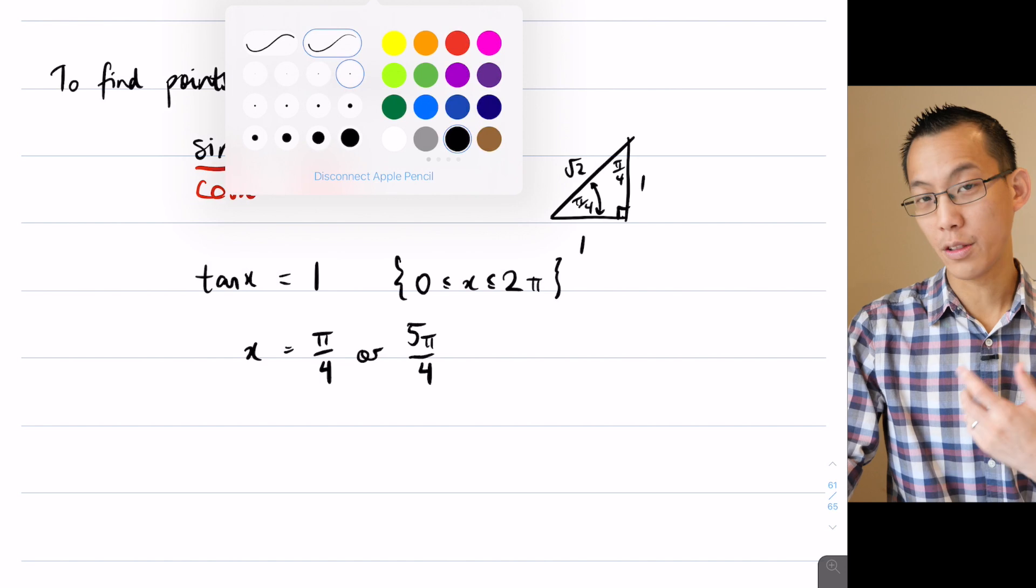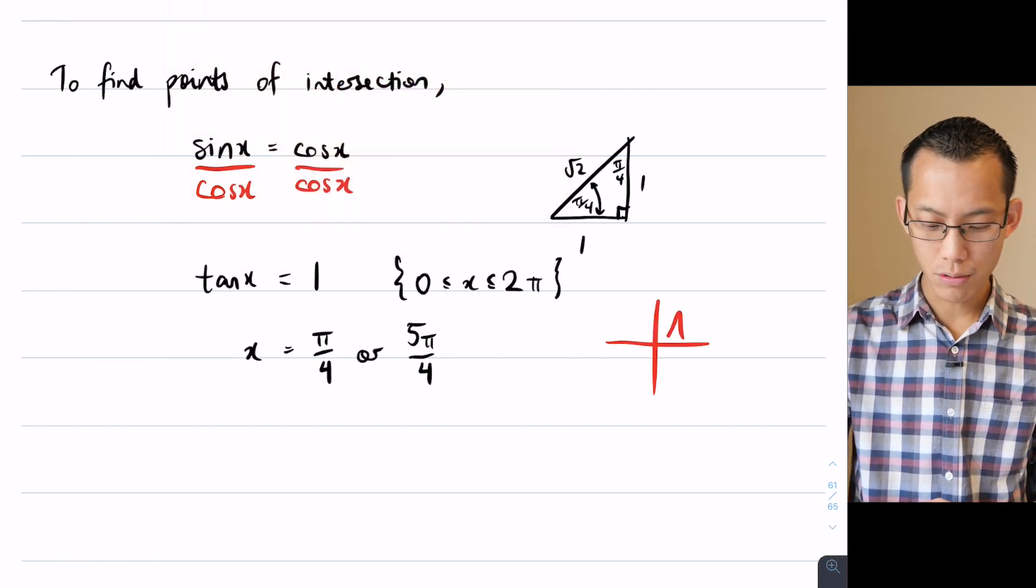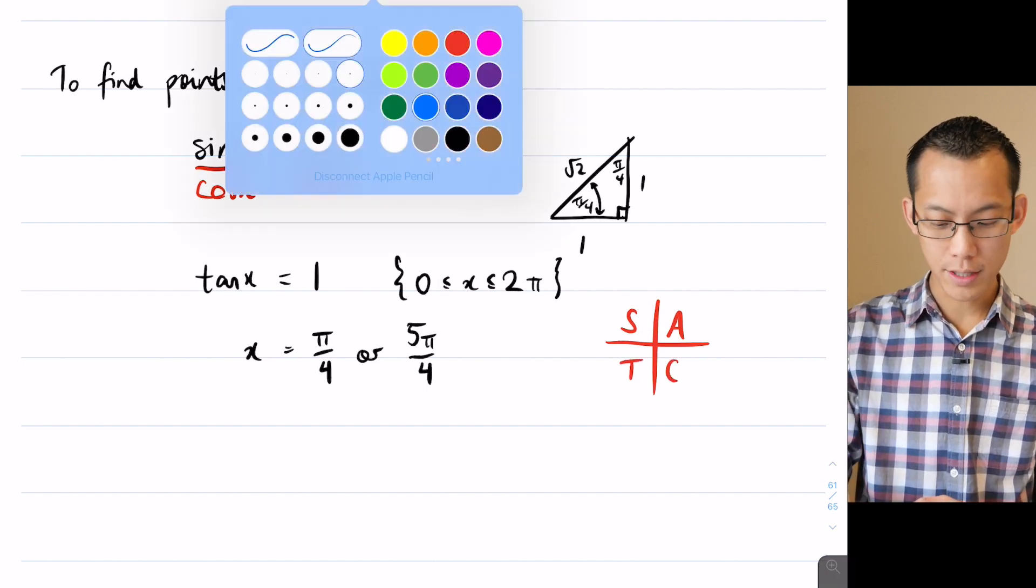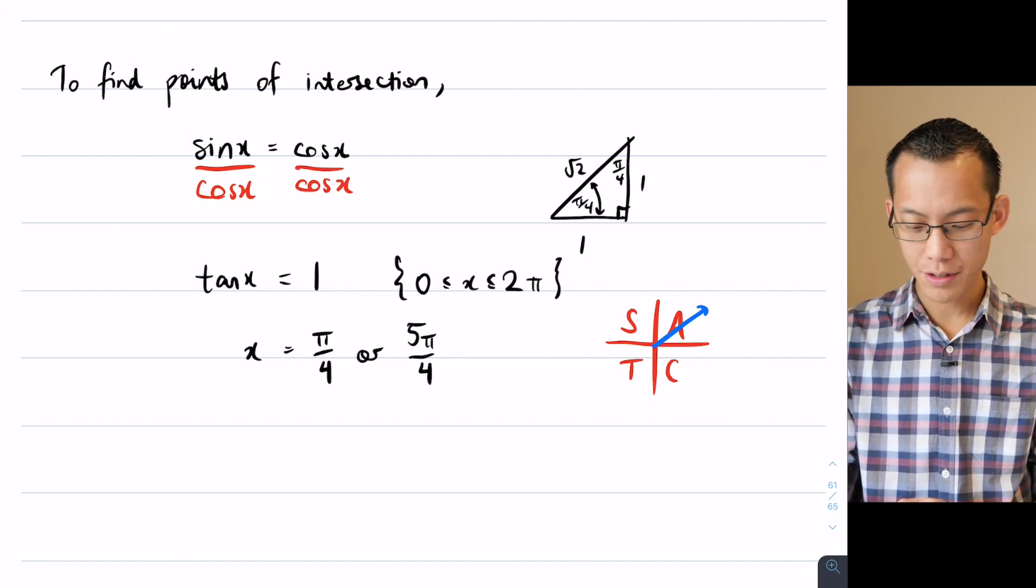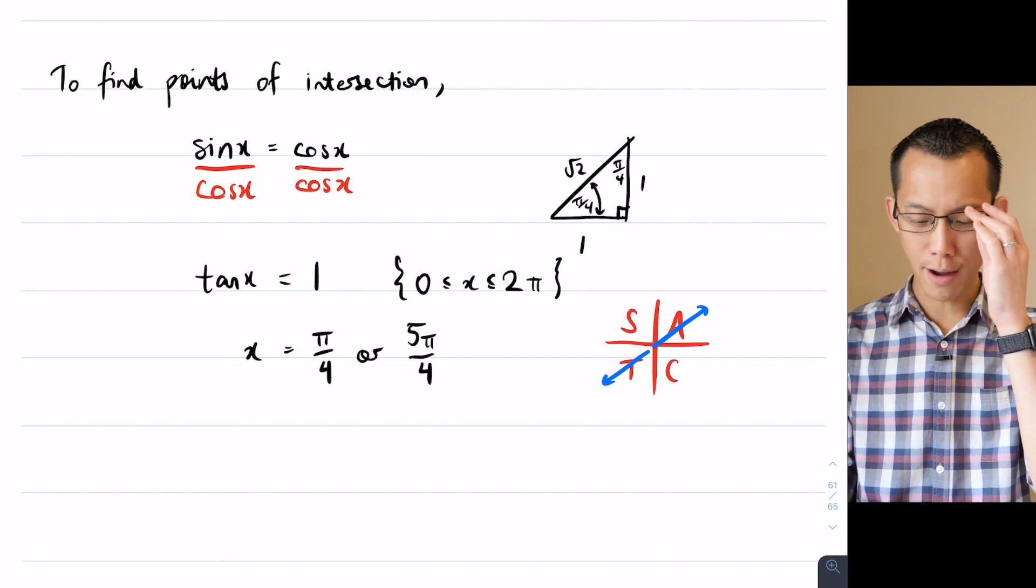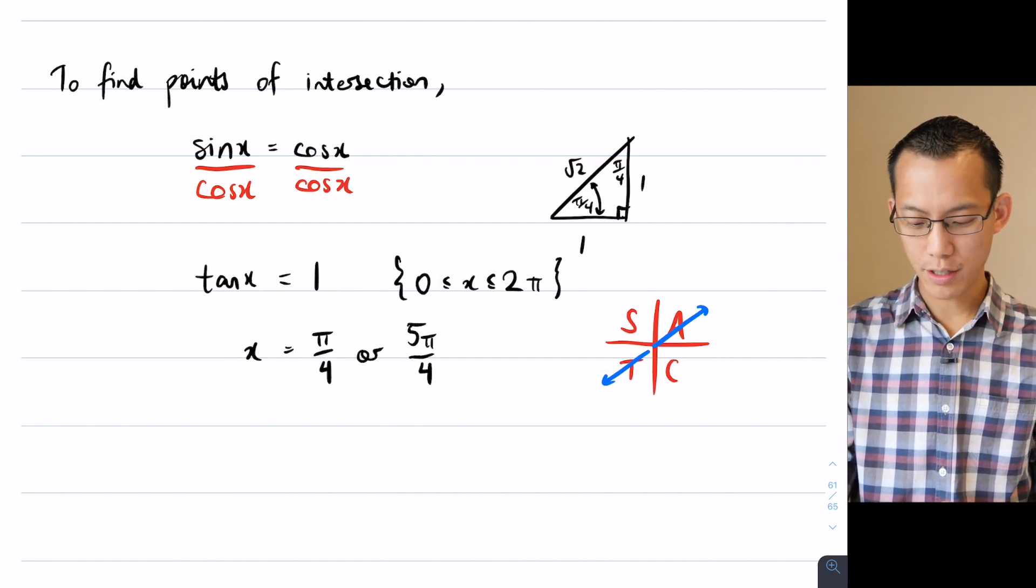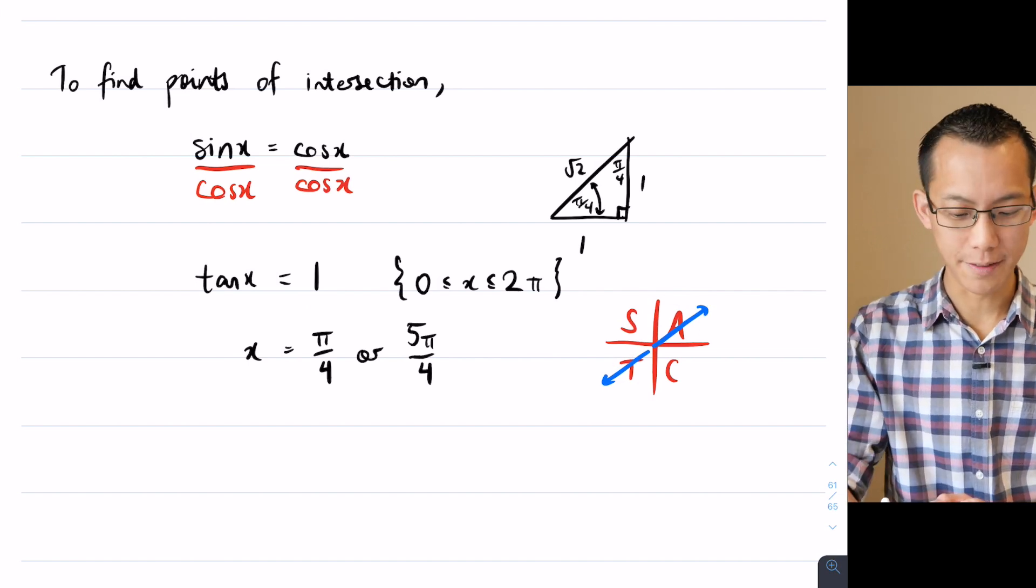Now it's worth mentioning that's not the only way to get these two solutions. If you wanted, you could have gone for the all stations to central alternative, and we worked out that the first solution π on 4 is in the first quadrant, and then the second will be down here in the third quadrant, which is 5π on 4, because I've got tan x being positive, which is in your first quadrant and your third quadrant.